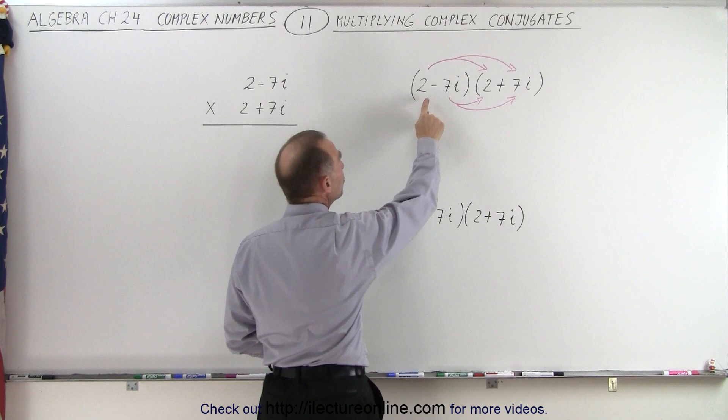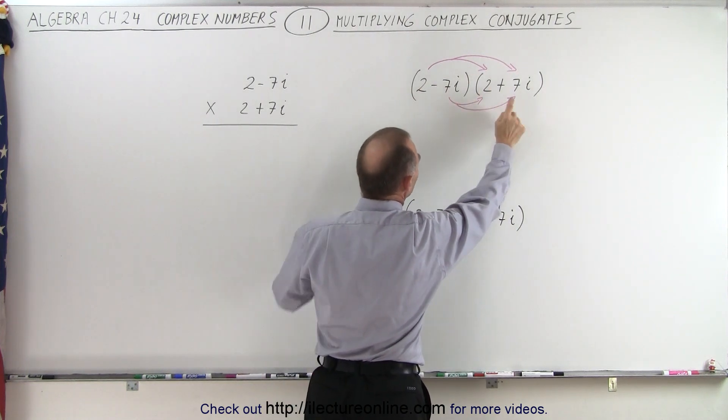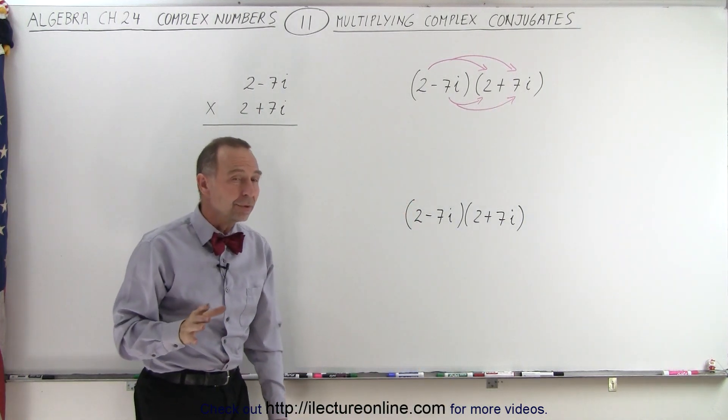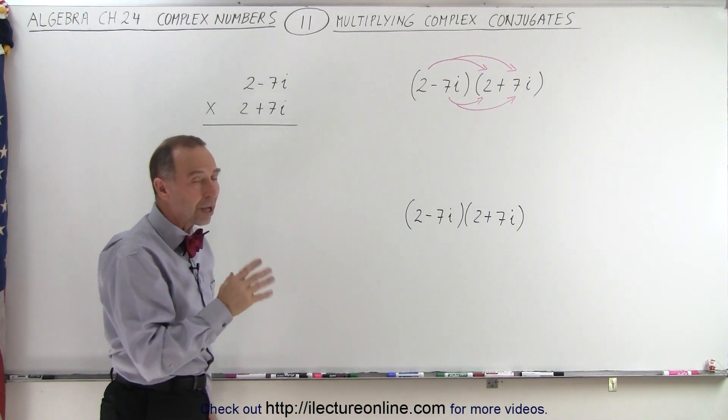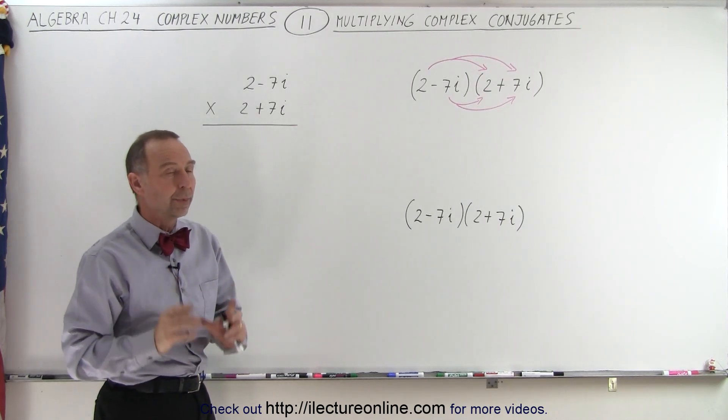Notice here we have 2 minus 7i and 2 plus 7i. They look identical except the sign is different. When that happens, you end up with a product where the imaginary part disappears and you only have a real part left.